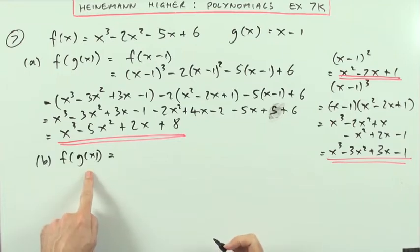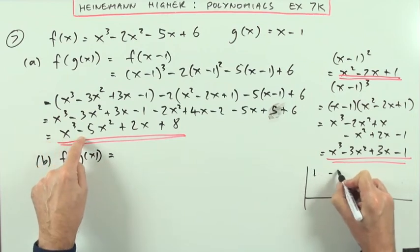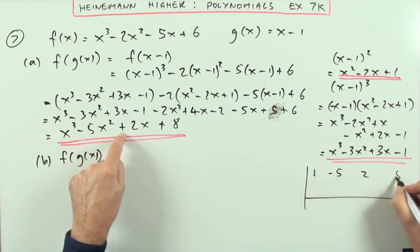Now part B says fully factorise f of g of x. Fully factorise this expression. Right, I'll use my synthetic division table here. Where's my coefficients? 1, negative 5, 2 and 8.